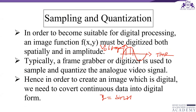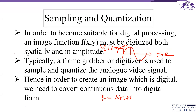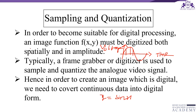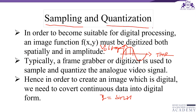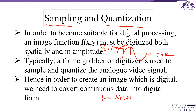In digital image processing, signals captured from the physical world have to be converted into digital form. This process is called the digitization process. To do that, we perform two methods: sampling and quantization. Sampling means digitizing the coordinate value. Quantization means digitizing the amplitude value.